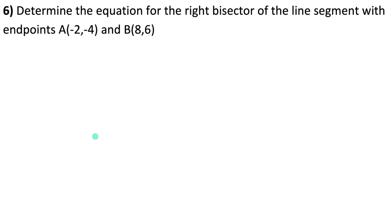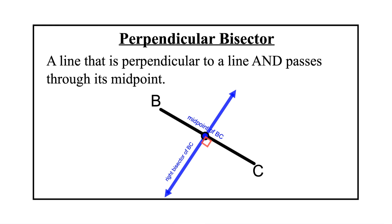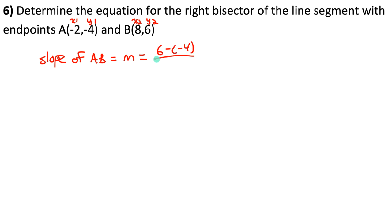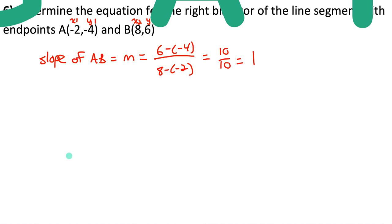Example 6: determine the equation for the right bisector of the line segment with endpoints A and B. The right bisector, also called the perpendicular bisector, is a line perpendicular to a segment that passes through its midpoint. I need the slope of AB first: (y₂ − y₁)/(x₂ − x₁) = (6 − (−4))/(8 − (−2)) = 10/10 = 1. The right bisector is perpendicular to this line, so its slope is the negative reciprocal of 1.